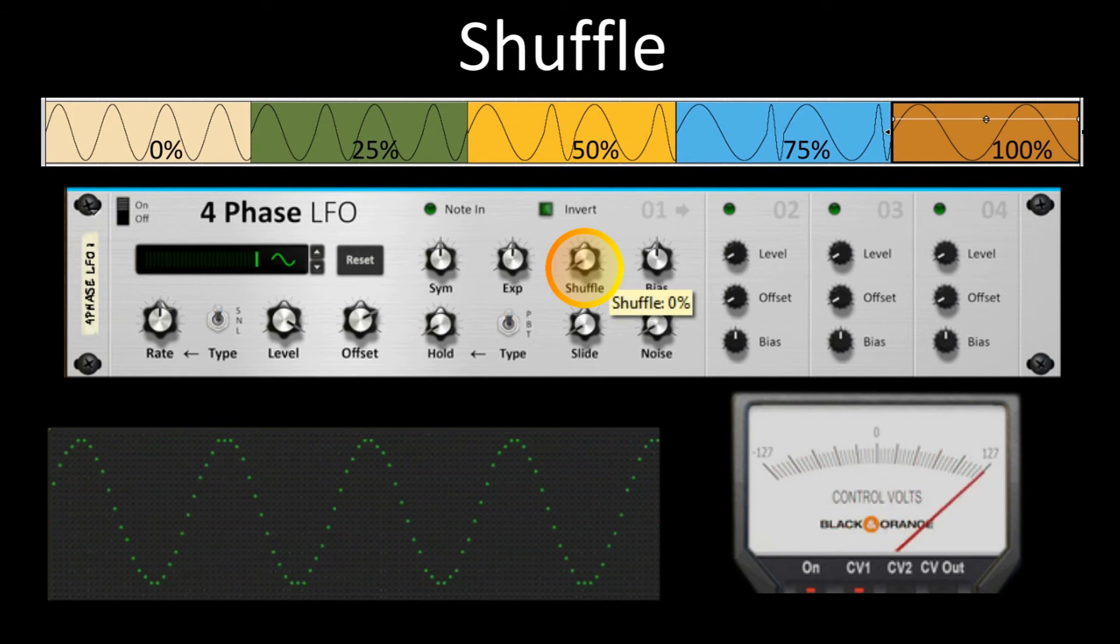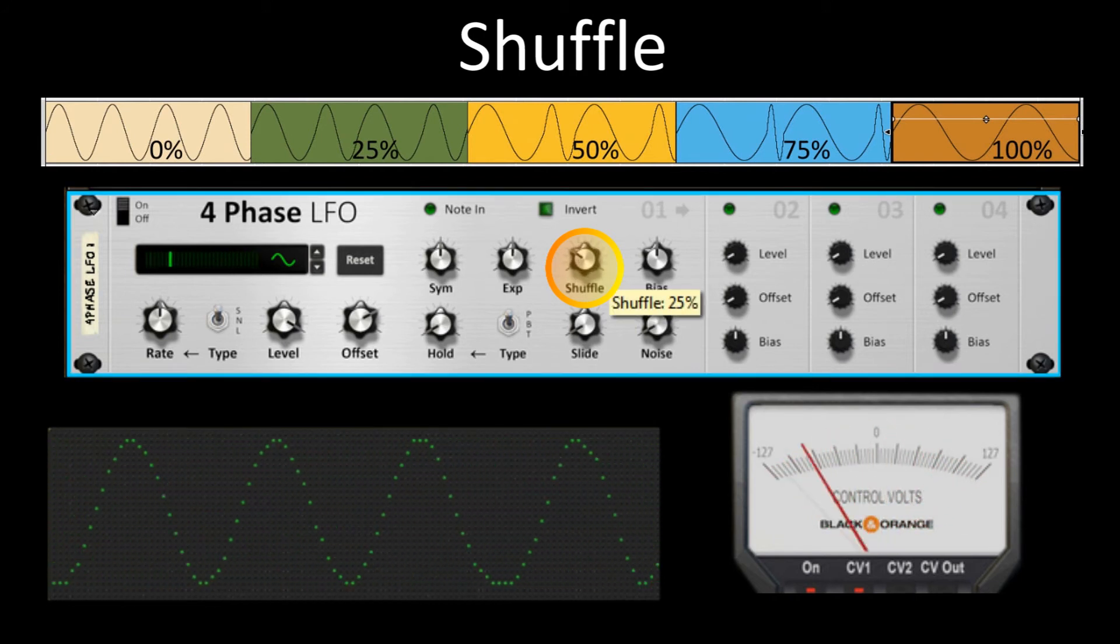With shuffle, it is possible inside a two-cycle frame to modulate the proportion of this frame used by each of the two LFO phases. At 50%, phase 1 lasts half a cycle and phase 2 one and a half cycles. At 100%, phase 2 lasts two cycles.